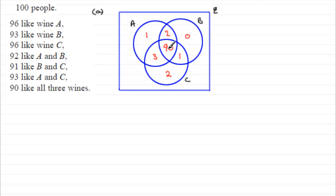Be very careful — don't think that's completed. Make sure you check that the total of all of these numbers comes to 100. If it doesn't, there must be some numbers outside the circles. If we add all of these values up, we get 99. So in fact, there is one person left out of the 100 that doesn't like any of these wines.